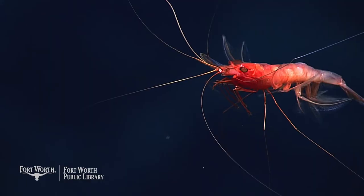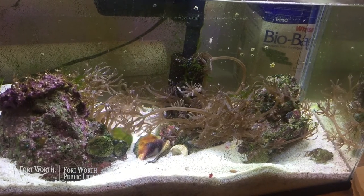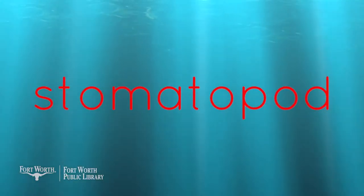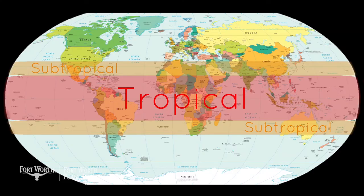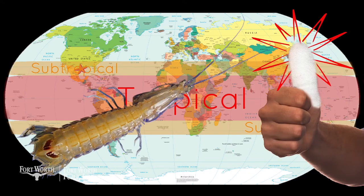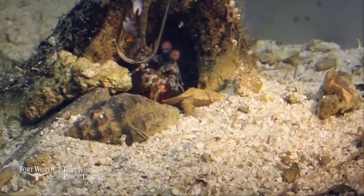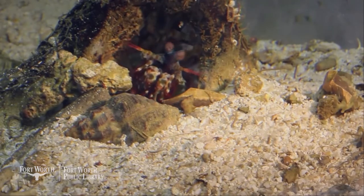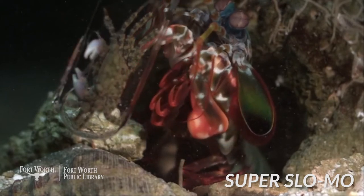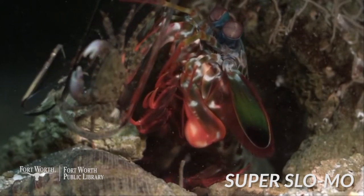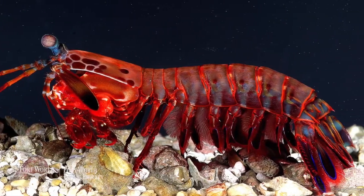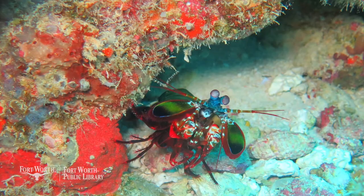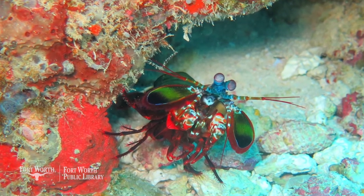This is a mantis. This is a shrimp. This is a mantis shrimp, which is neither, but looks like both. Mantis shrimp are stomatopods — their own order of marine crustaceans. Most species live in tropical and subtropical waters, and there is at least one species in the Gulf of Mexico known as a thumb splitter for the damage it can do to humans. Mantis shrimp have the fastest punch in the world, as fast as a speeding bullet. Even if they miss their prey, the shockwave that their punch creates can be enough to stun their victim. They aren't often kept in aquariums because they have been known to break aquarium glass, and they are voracious predators — meaning they eat everything they see. I think the most spectacular looking is the peacock mantis shrimp.